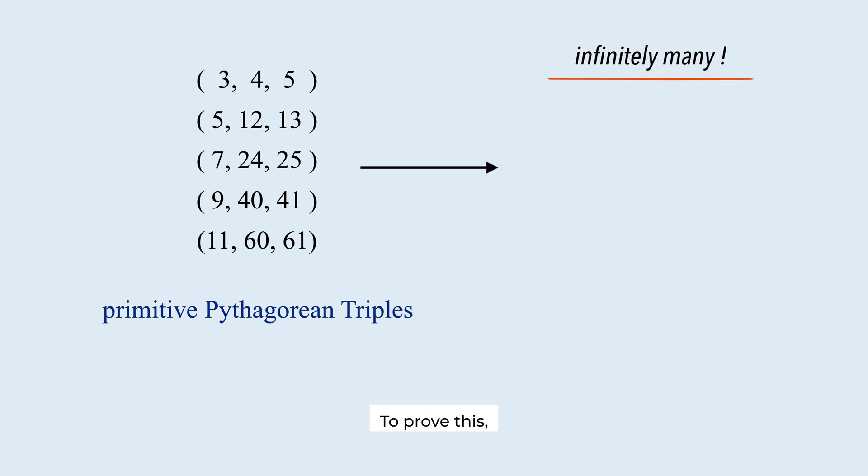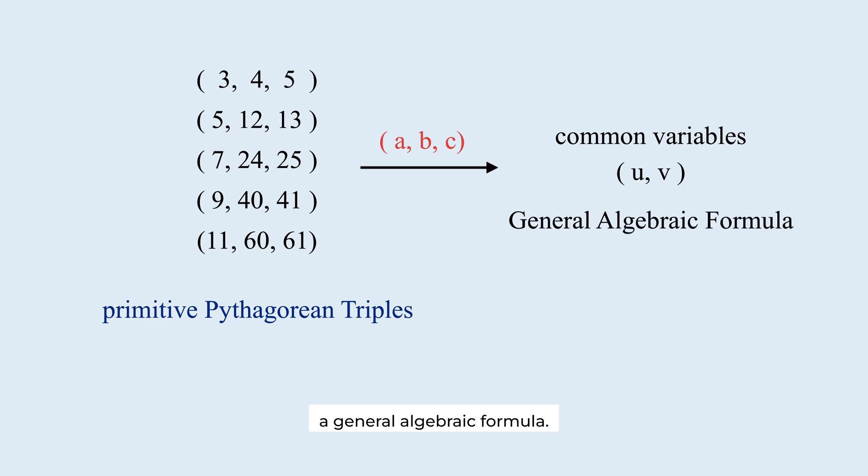To prove this, we need a strategy. It is to express the three numbers a, b, and c of a primitive Pythagorean triple using common variables, such as u and v, in order to derive a general algebraic formula. This approach will lead us to a complete proof.